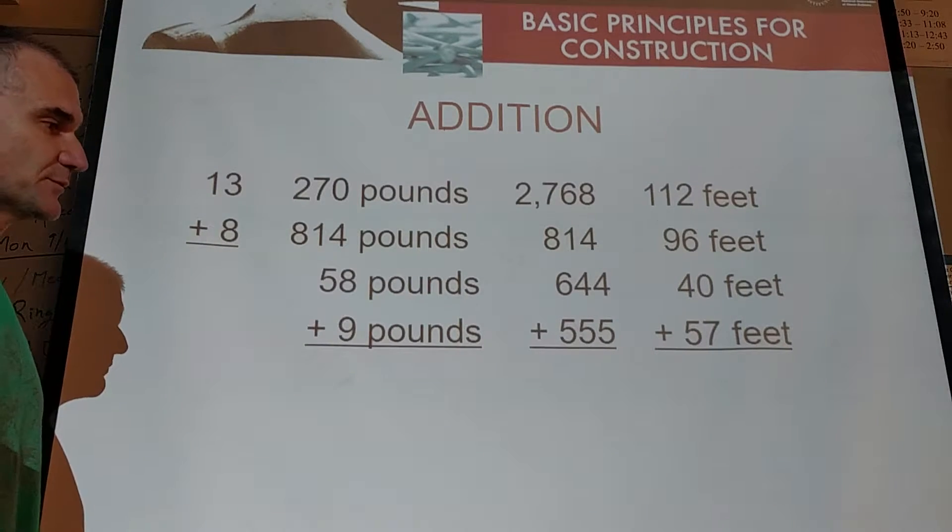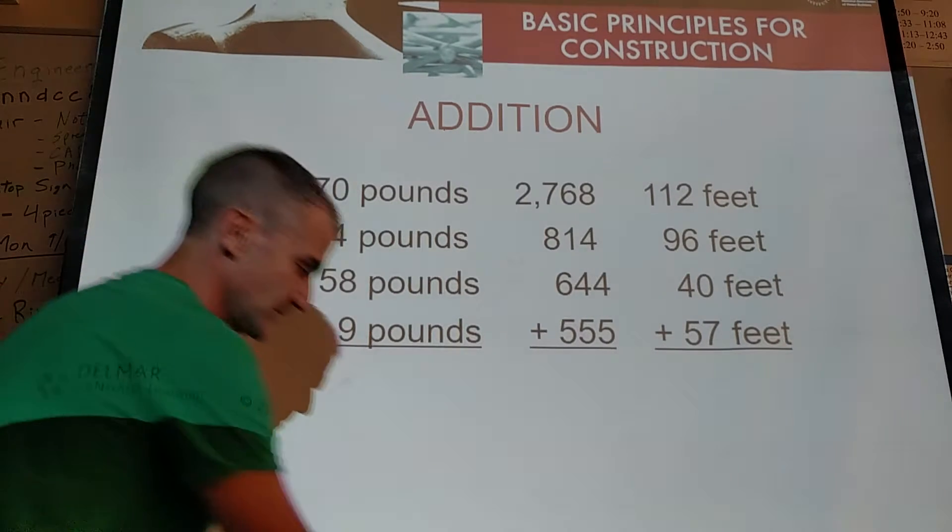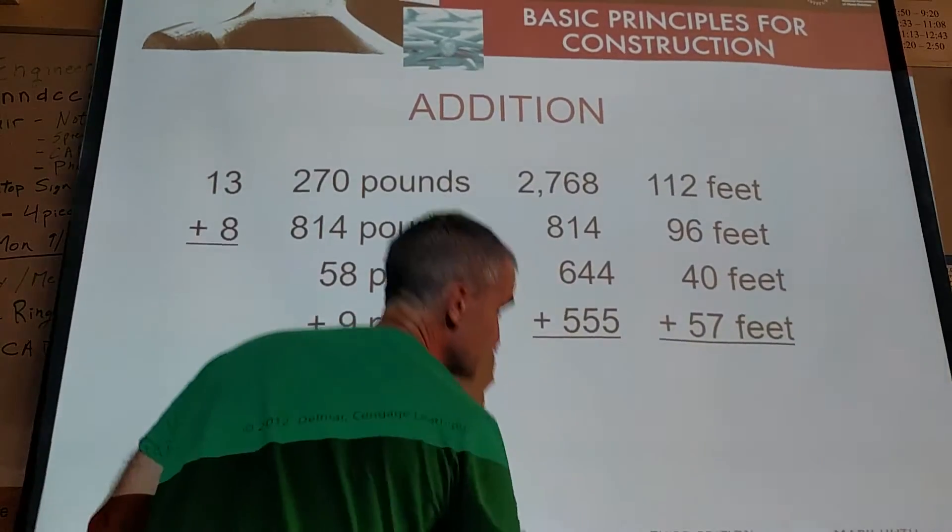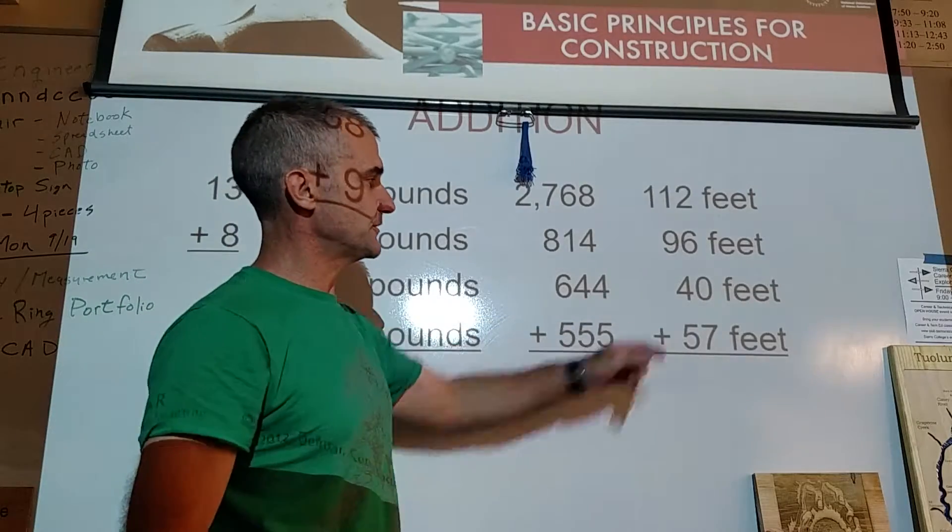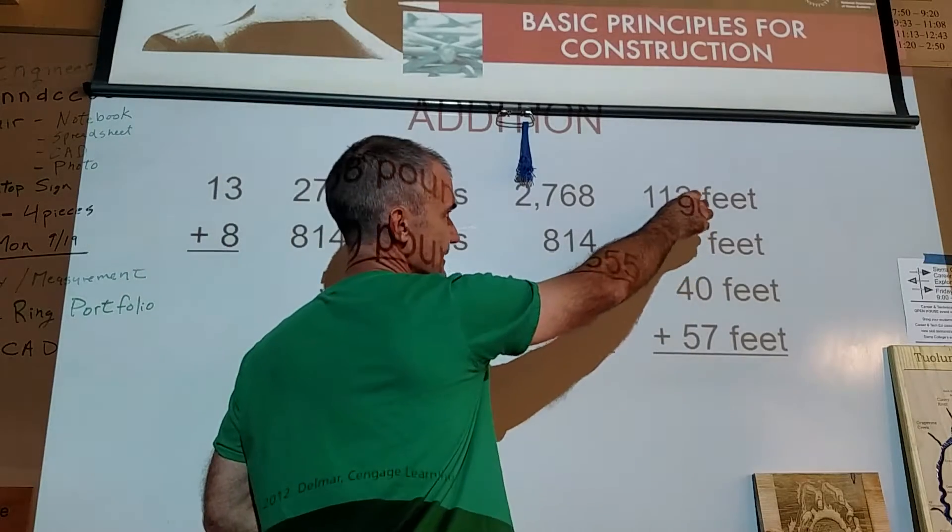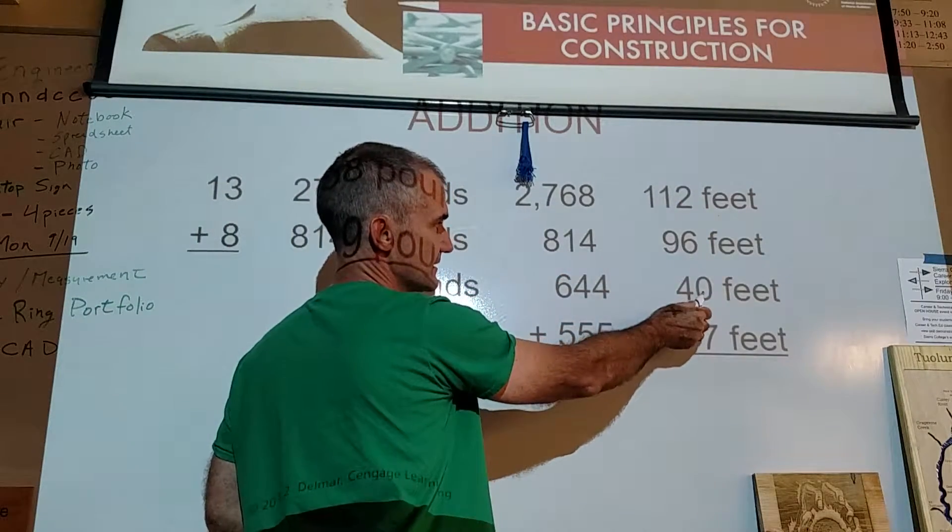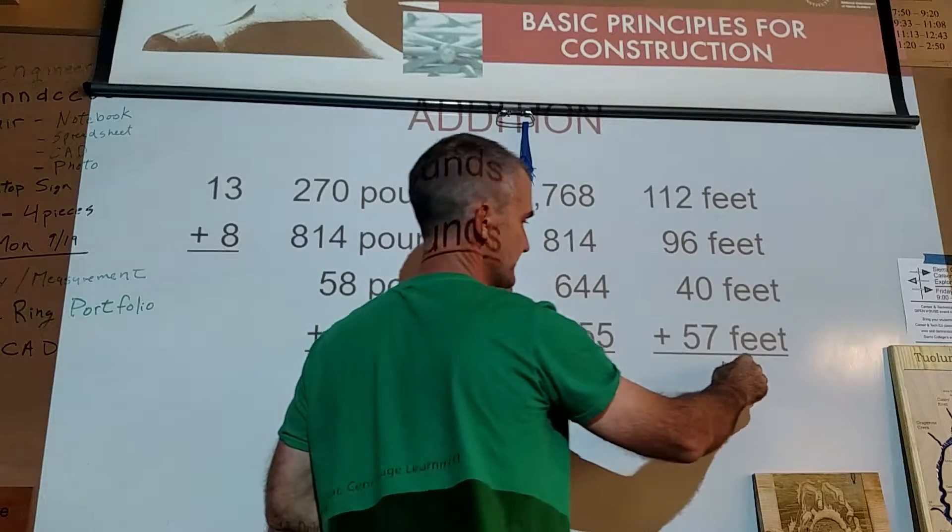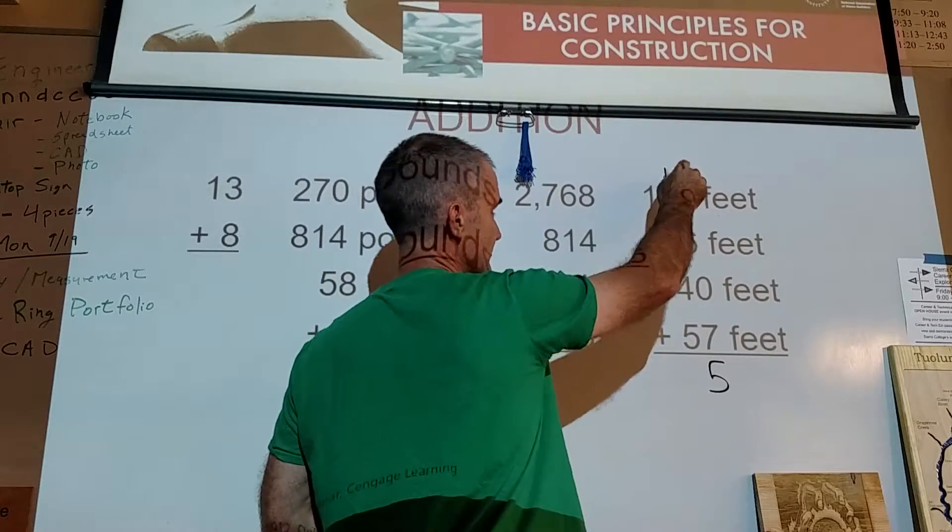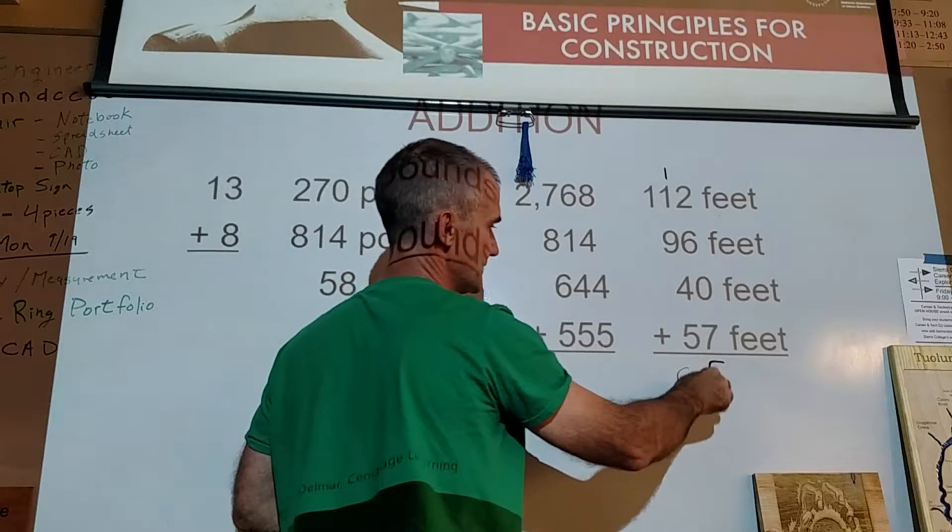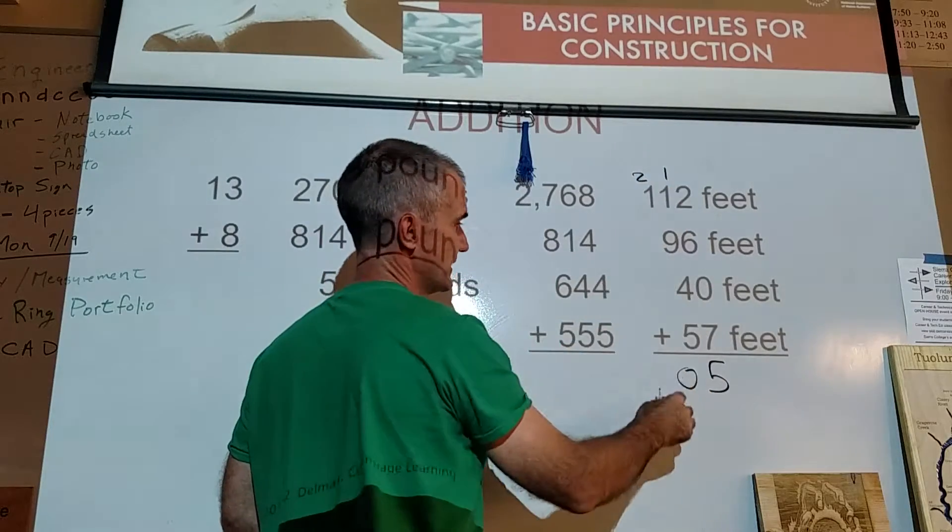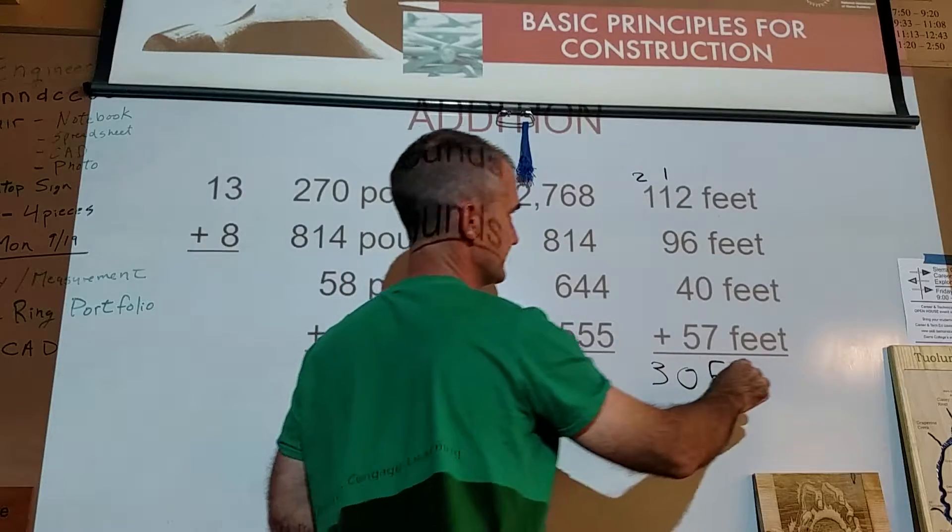Here's some example problems. I'll run through some of them. So 112 feet plus 96 feet plus 40, 57. I start on the right. 2 and 6 is 8. 0 and 7 is 15. Carry the 1, 2, 11, 15, and 20. Carry the 2 and I get 305 feet.